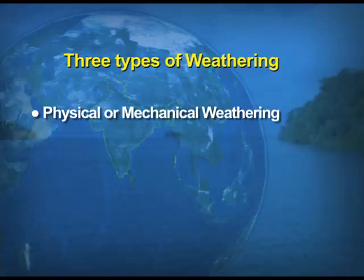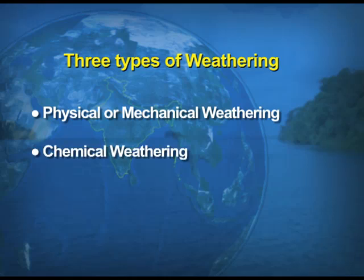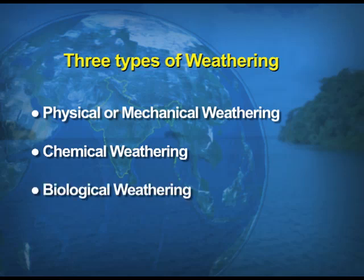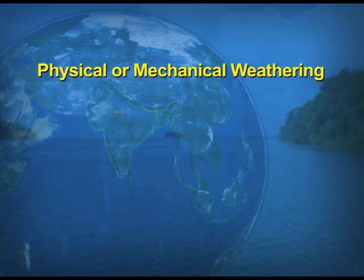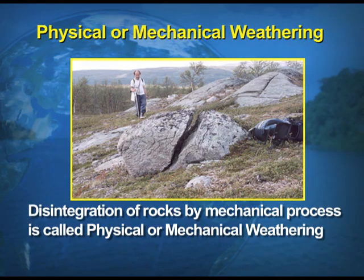Now we take up the three types of weathering. One is physical weathering, which is also known as mechanical weathering. Second is chemical weathering, and the third is biological weathering. Physical or mechanical weathering is the disintegration of rocks by a mechanical process. Now if you look at the screens, there is a visual for you to see how mechanical weathering looks like.